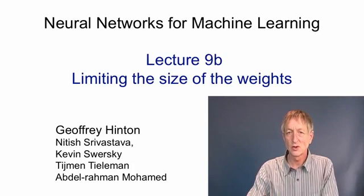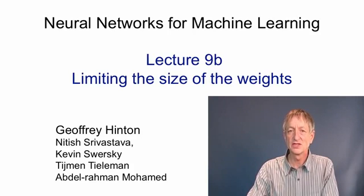In this video I'll talk about how we can control capacity by limiting the size of the weights. The standard way to do this is to introduce a penalty that prevents the weights from getting too large, with the implicit assumption that a network with small weights is somehow simpler than a network with large weights.